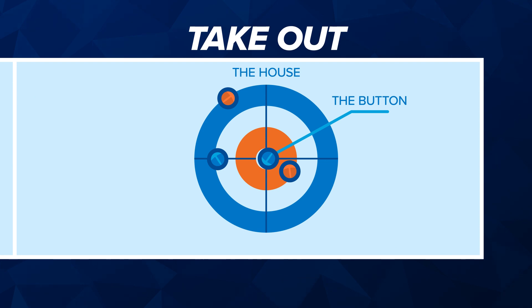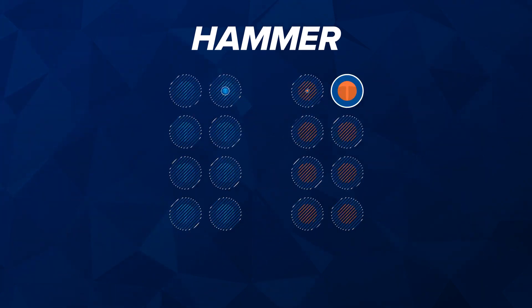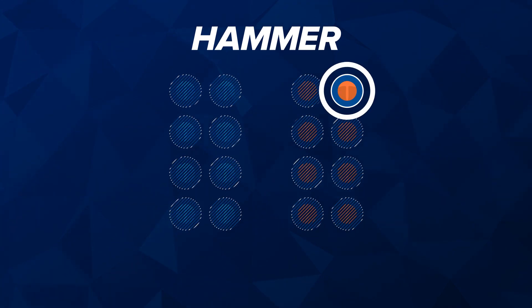Takeout — this means removing one stone from play by hitting it with another stone. Hammer — the team that throws the last stone in each end.